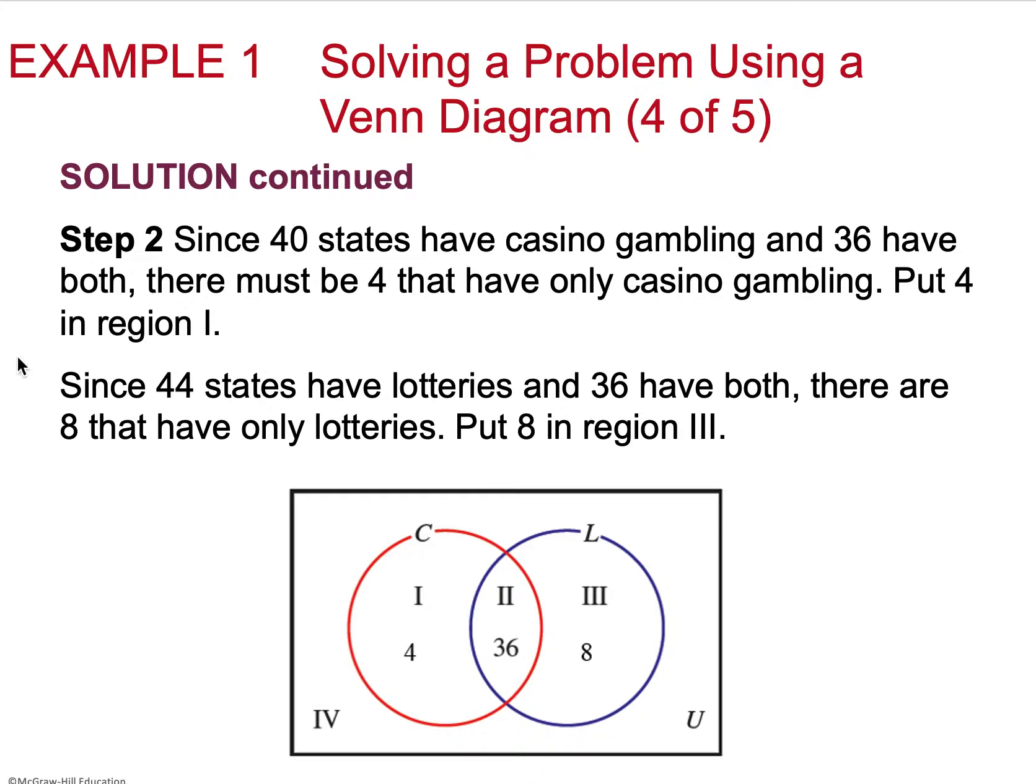So in step 2, 36 states have both, so we're going to put 36 into the both region. We have 40 states that have casino gambling, and 36 that have both, so then 4 have only casino. Where this gets confusing is that we have 4, so we're going to fill in region 1 because that's separate from the 36. Sometimes students will try and do 36 minus 4 to get 32 there. There's a couple of different misconceptions that happen there.